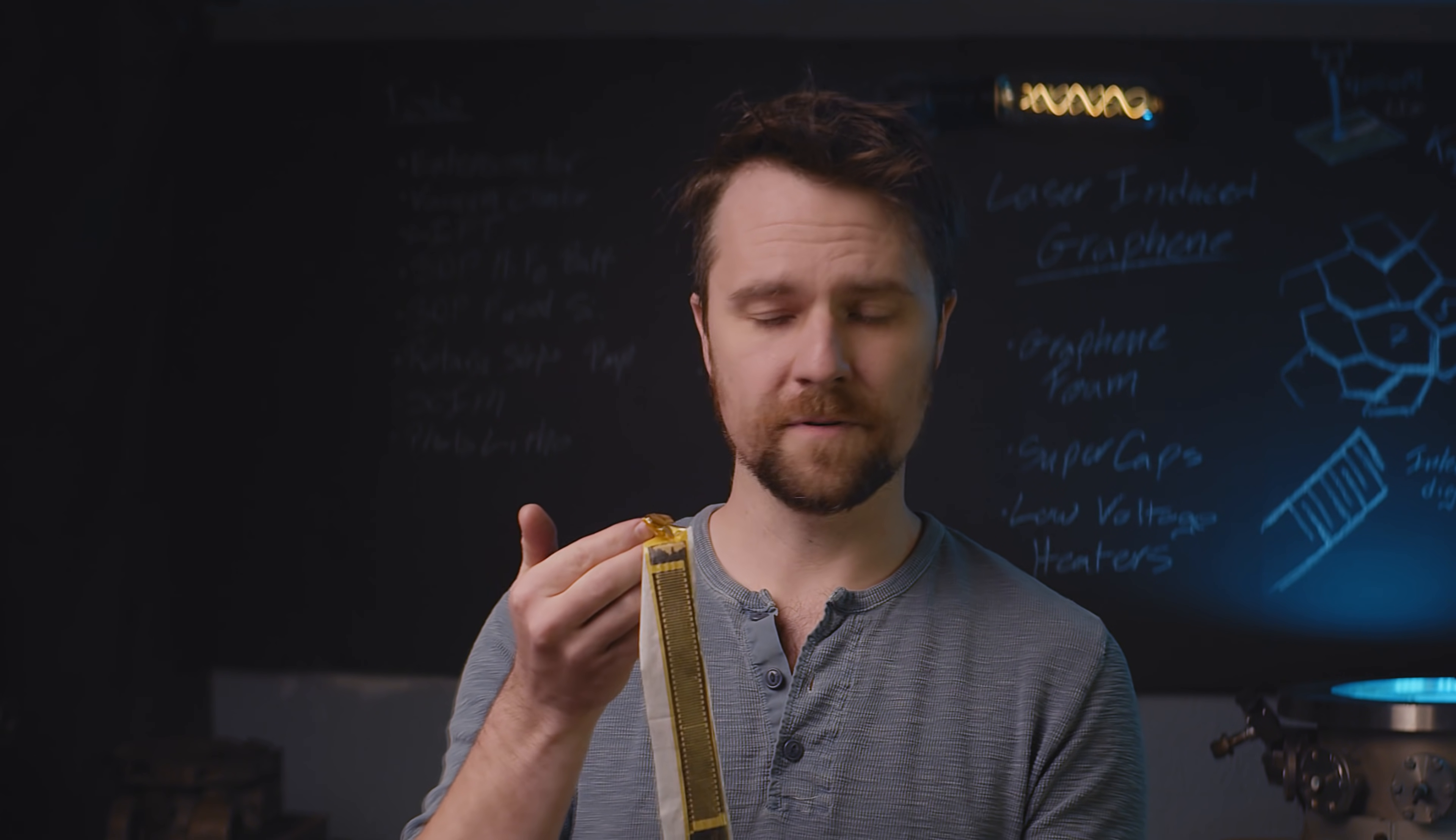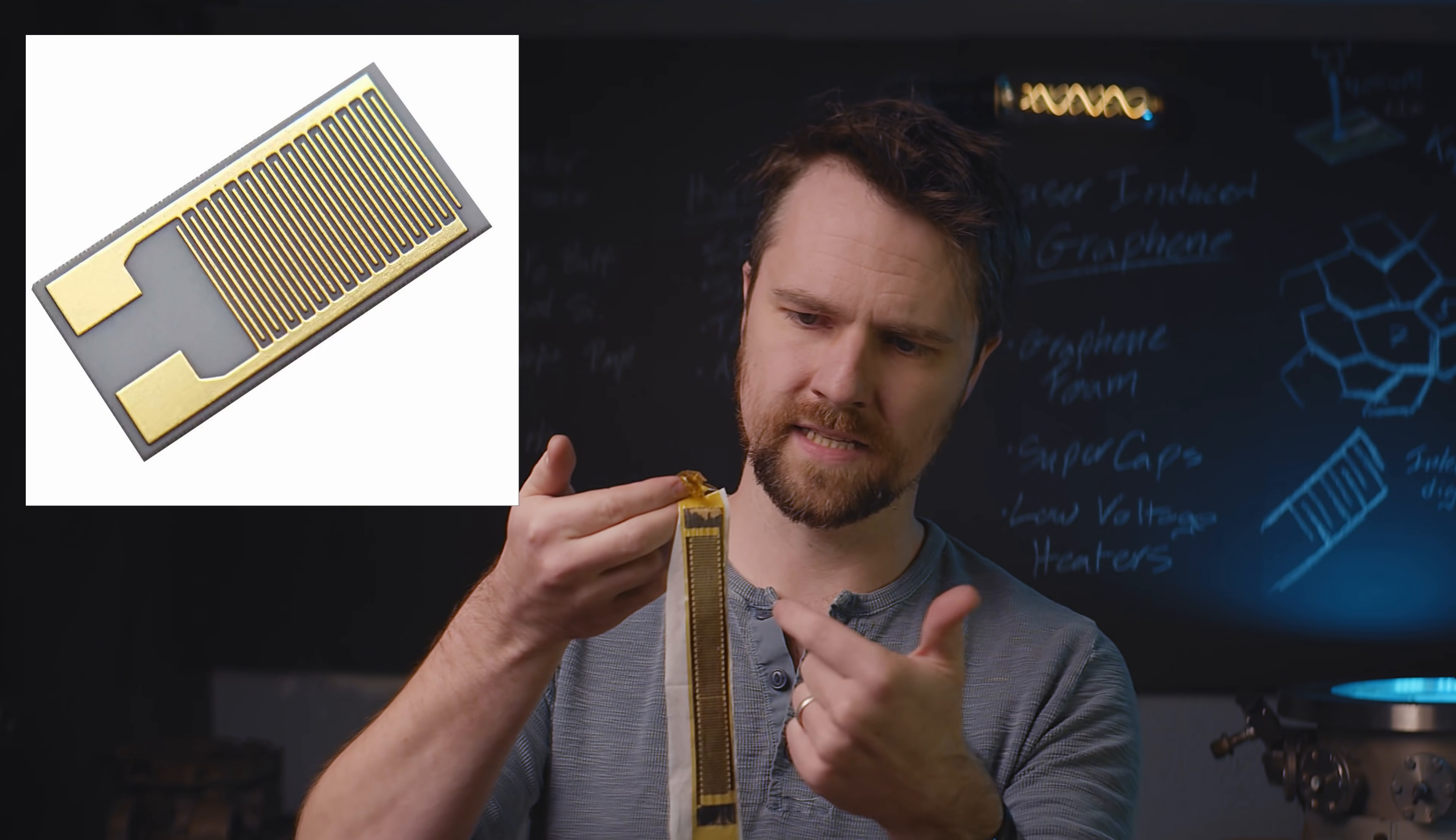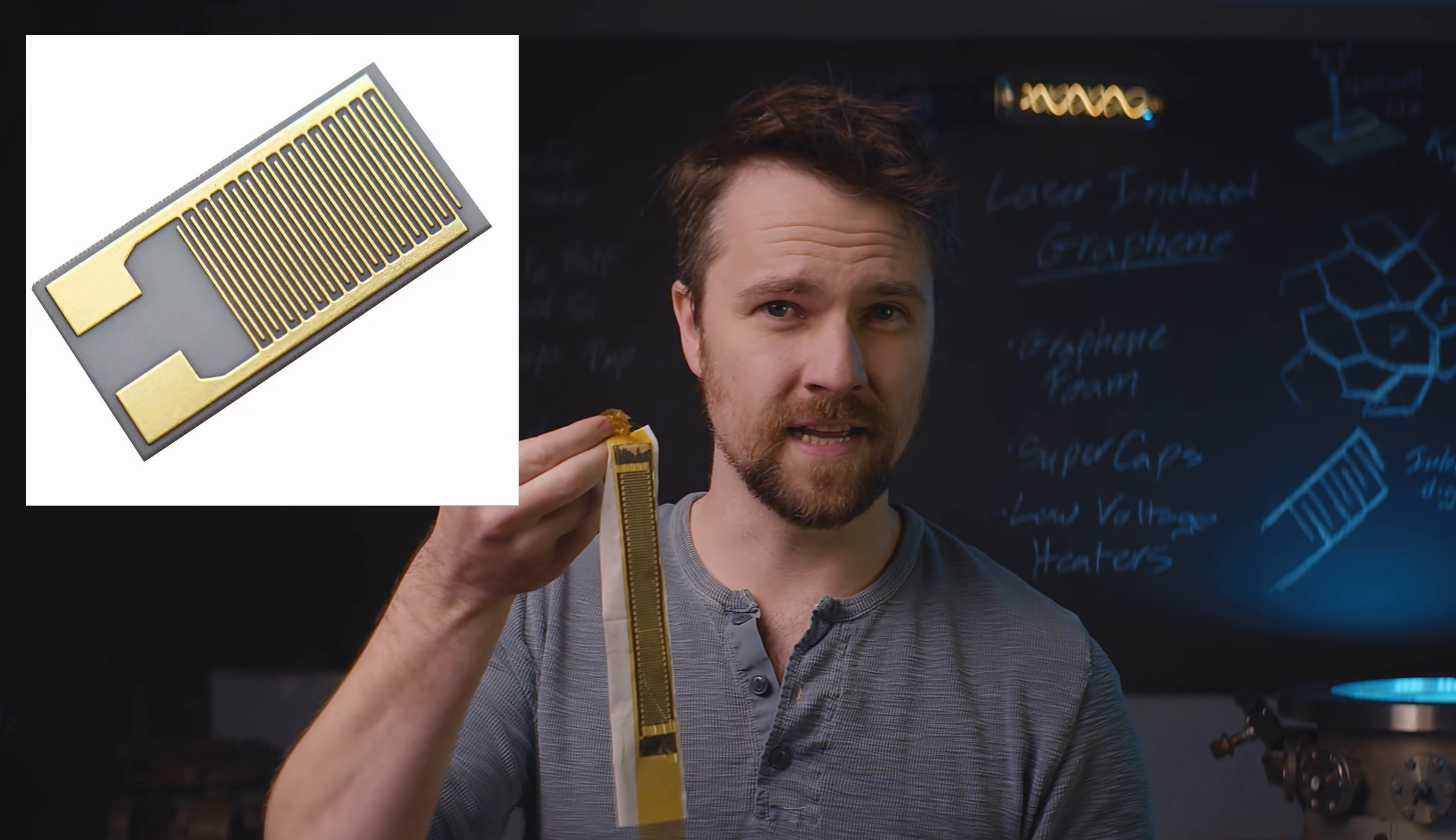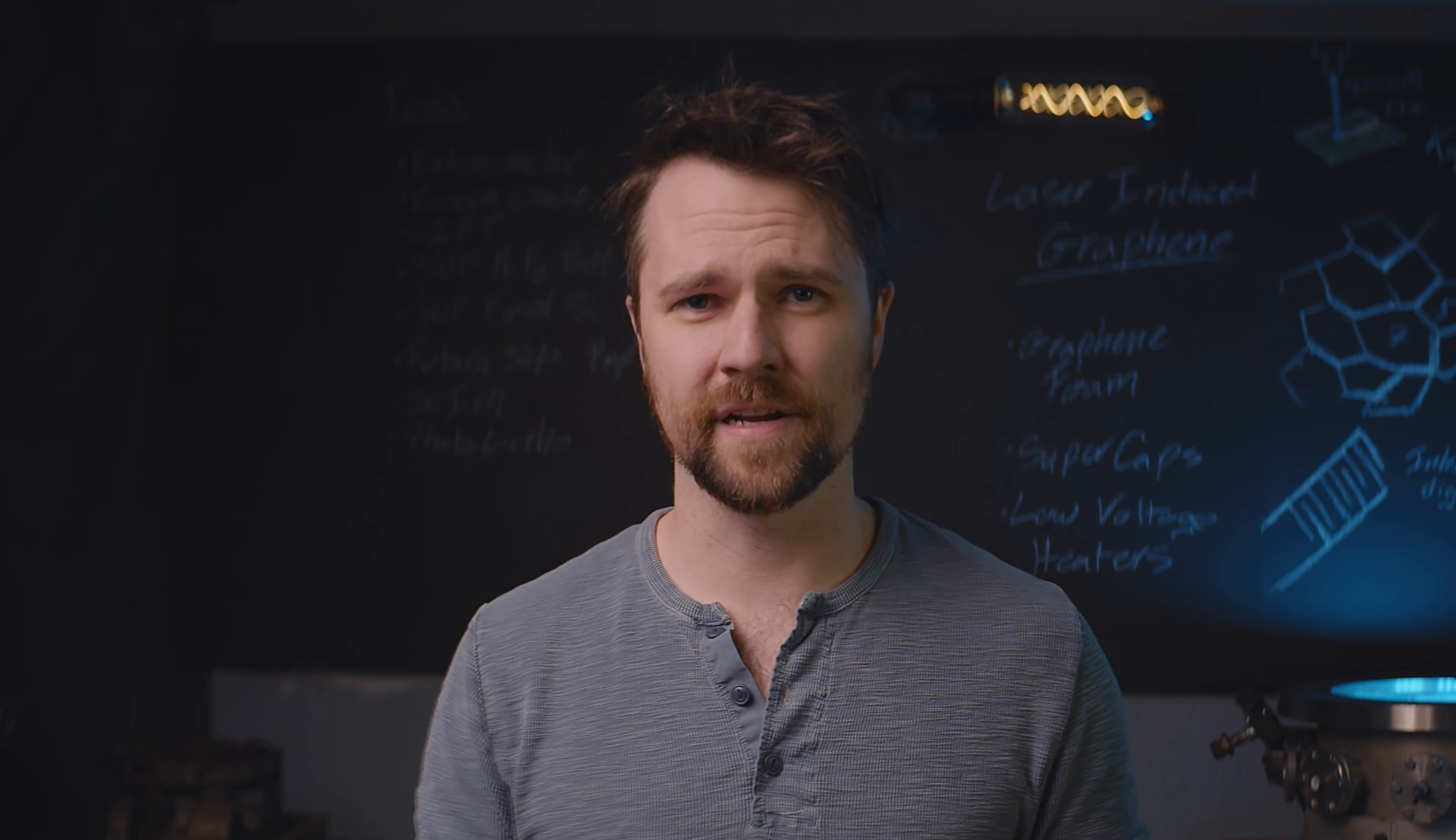This type of pattern is known as an interdigitated electrode, where you have one electrode on one side and the other electrode on the other side. And there's little fingers that kind of go in between each other. In between those fingers, the electrolyte resides. And this forms the basis of the supercapacitor. You take some tape, lay it down, hit it with a laser, and then add a bit of electrolyte over the top.